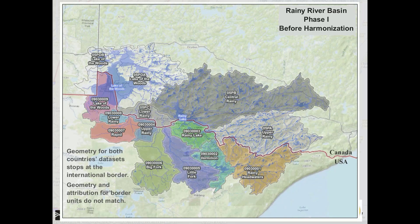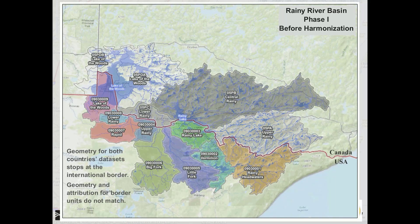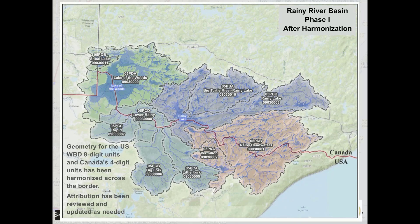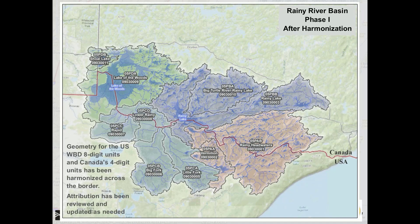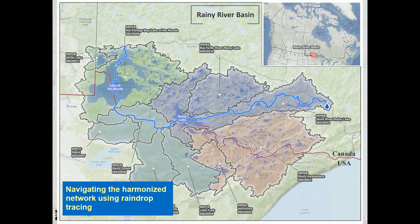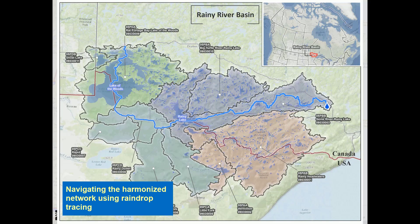Phase 1 has been completed and the harmonized data are now available within the WBD. Phase 2 includes the development of harmonized hydrography, accomplished by synchronizing the geometry and cross-stepping attribution between the U.S. NHD and Canada's NHN. The harmonized hydrography includes network navigation on the flow lines that allows users to trace the network up and downstream across the international border through multiple hydrologic units, as shown in the animated graphic. This phase has been completed and is now in maintenance. Note that before data harmonization, the raindrop trace used to stop at the border.